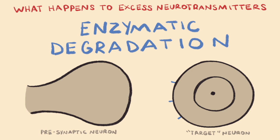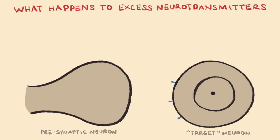Excess neurotransmitters are generally removed from the synaptic cleft in one of two main ways. First, enzymatic degradation of neurotransmitters can occur, involving the breakdown of neurotransmitters into non-active products, which are then reabsorbed by the presynaptic neuron to be re-synthesized into neurotransmitters, or reabsorbed into the surrounding blood capillaries to be used elsewhere.